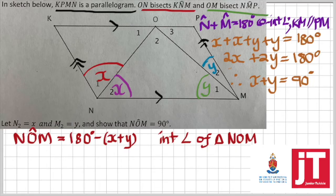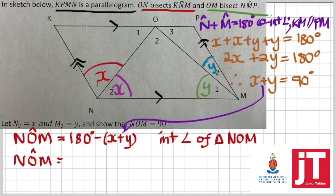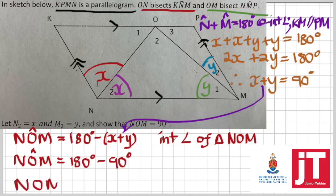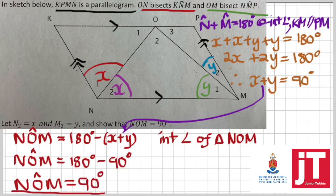But, we know that x plus y, we have it in our initial statement, and therefore, our next step will involve us substituting in place of x plus y. So, in the case of x plus y, we can say 90 degrees, and therefore, we get NOM is equals to 180 degrees minus 90 degrees. Simplifying that, we get our NOM being equal to 90 degrees, which was the required answer.